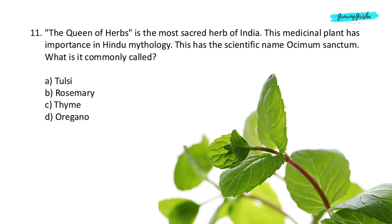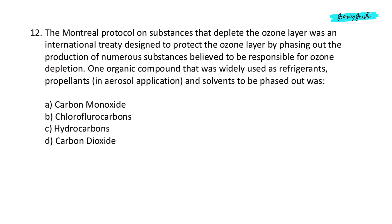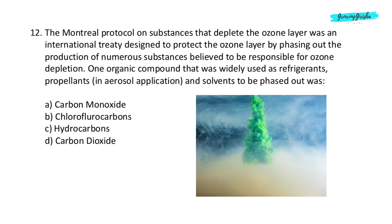Question 11. The queen of herbs is the most sacred herb of India. This medicinal plant has importance in Hindu mythology and has the scientific name Ocimum sanctum. What is it commonly called? Option A: Tulsi.